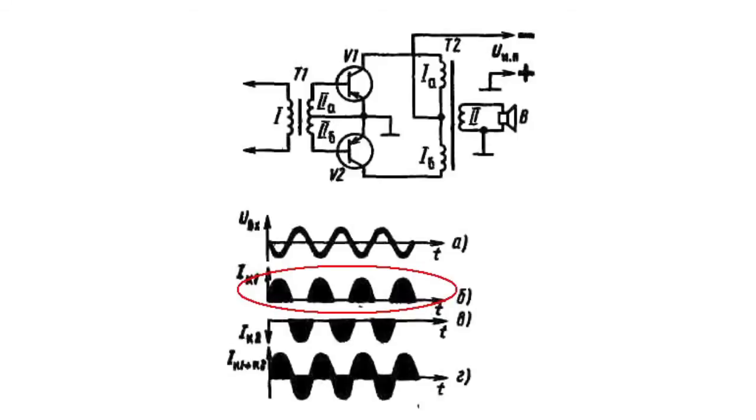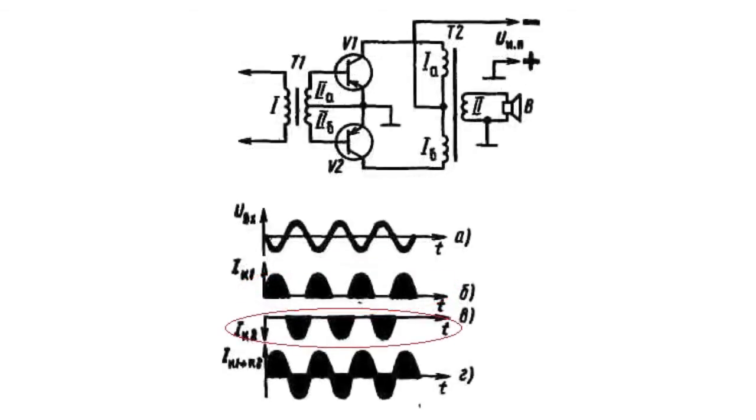The V2 transistor is open, and the current of its collector passes through the section of the primary bonding of the outlet transformer. The V1 transistor is closed.